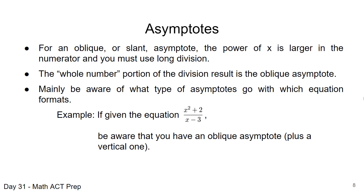For example, given x squared plus 2 divided by x minus 3, you should note: first, there's a vertical asymptote because there's a denominator — set it equal to zero and solve for x. Second, the exponent is larger in the numerator, so there's a slant or oblique asymptote. If asked to solve for it, you'd use long division, but mainly it's about recognizing that this equation has an oblique asymptote.